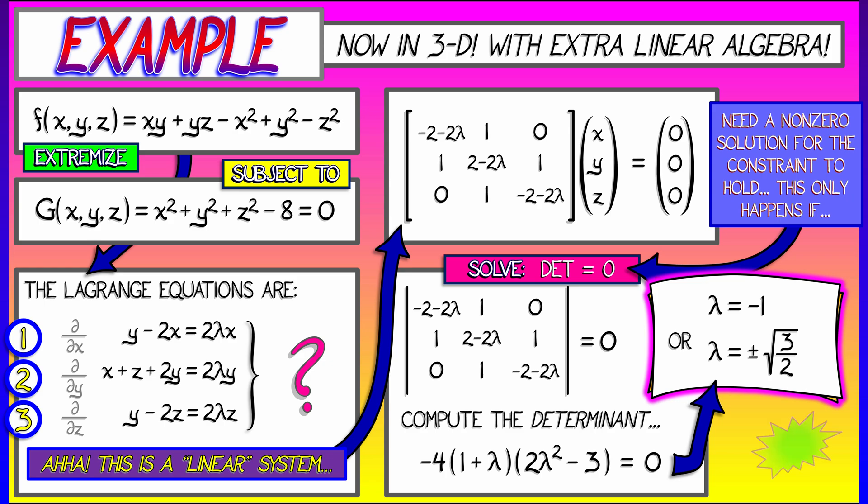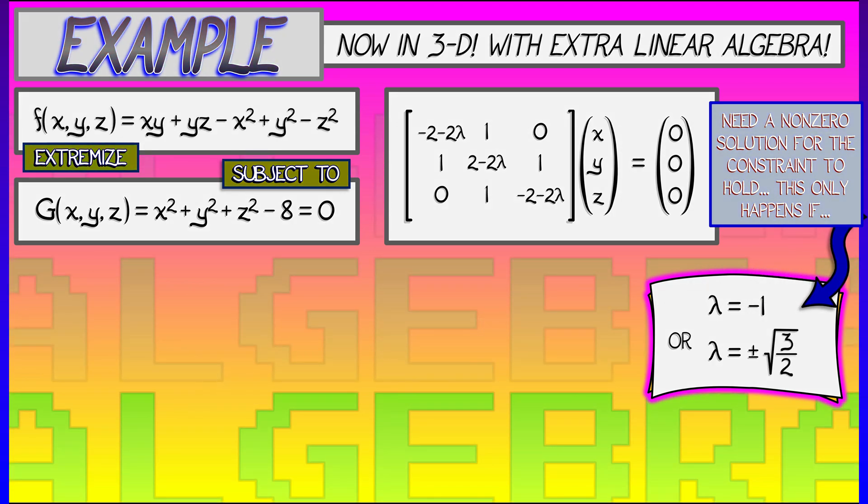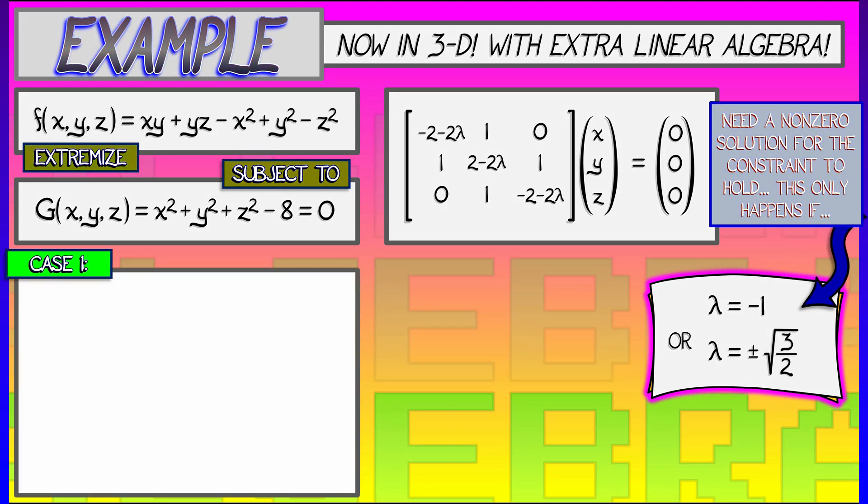Okay, what does that mean? That means at those values of lambda, and at only those values of lambda, you can get solutions to these equations in x, y, and z that have a chance of satisfying the constraint equation. So, what does this mean? This means we have to do things one case at a time.